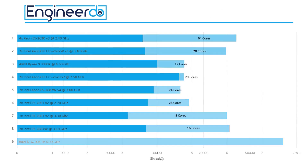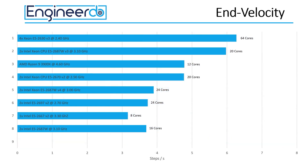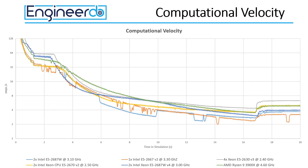We can also look at the computational velocity, which means how many integration steps the system can perform per real-life second. The results look pretty similar to the total run time results, but small changes are visible. One obvious example is that the PC on place 8 outperforms the PC ranking at 7, meaning on a longer simulation PC8 would have been faster than PC7. If we have a closer look at the results we can see that the computational performance is changing during the runtime of the simulation.